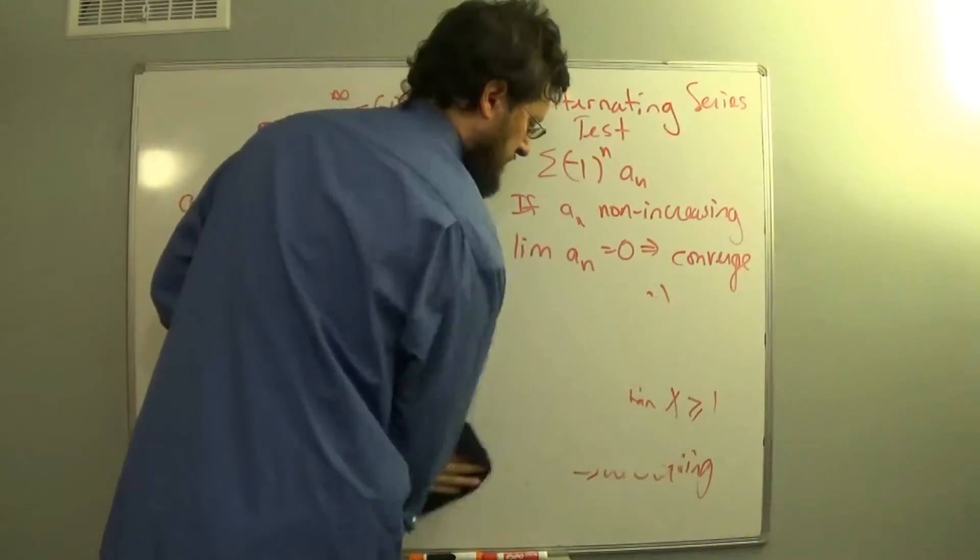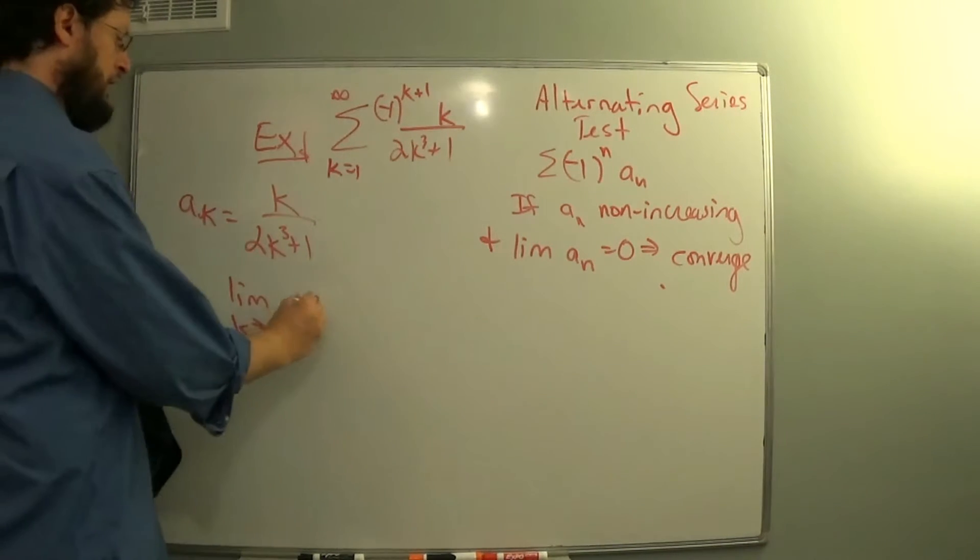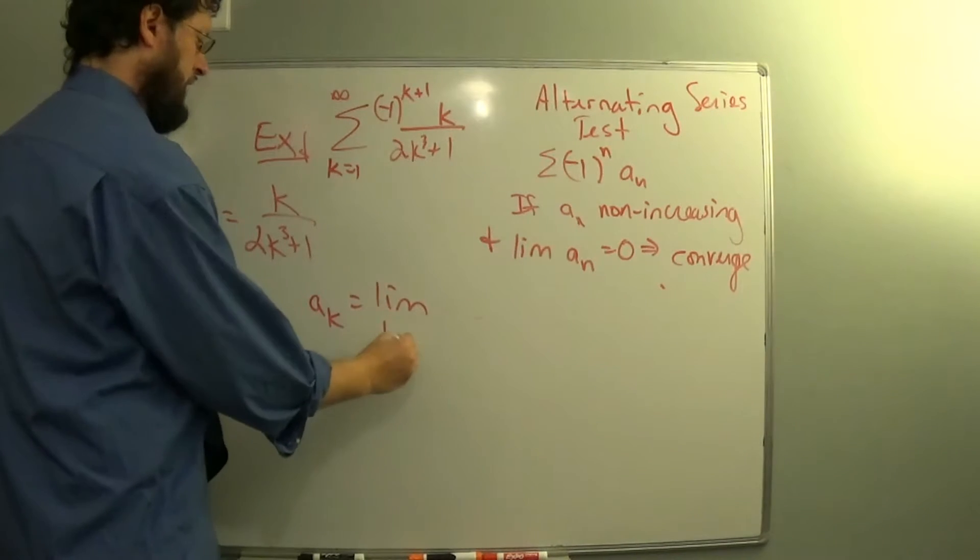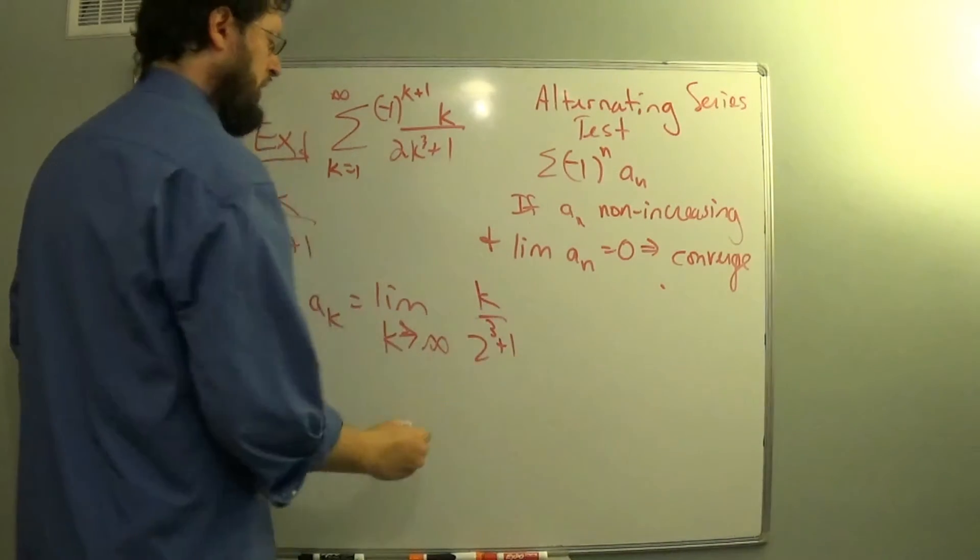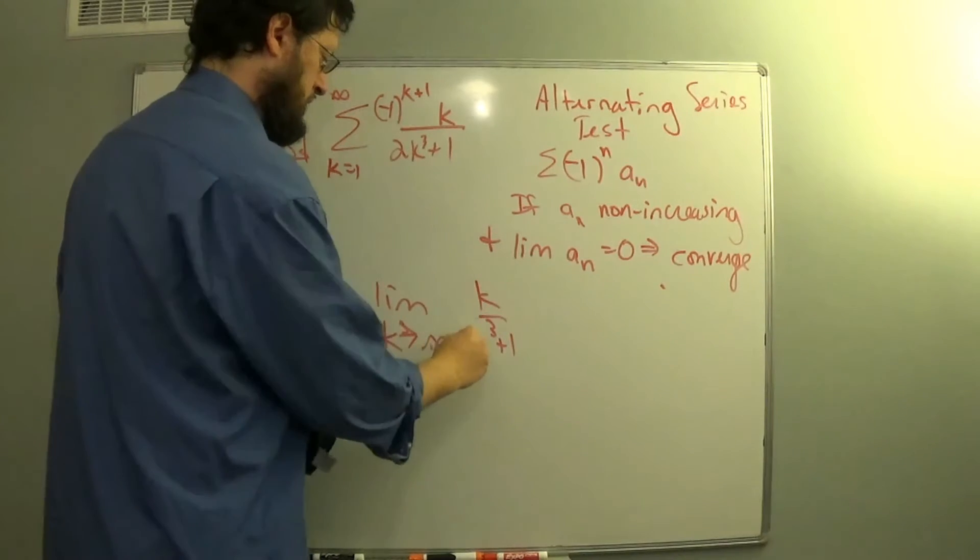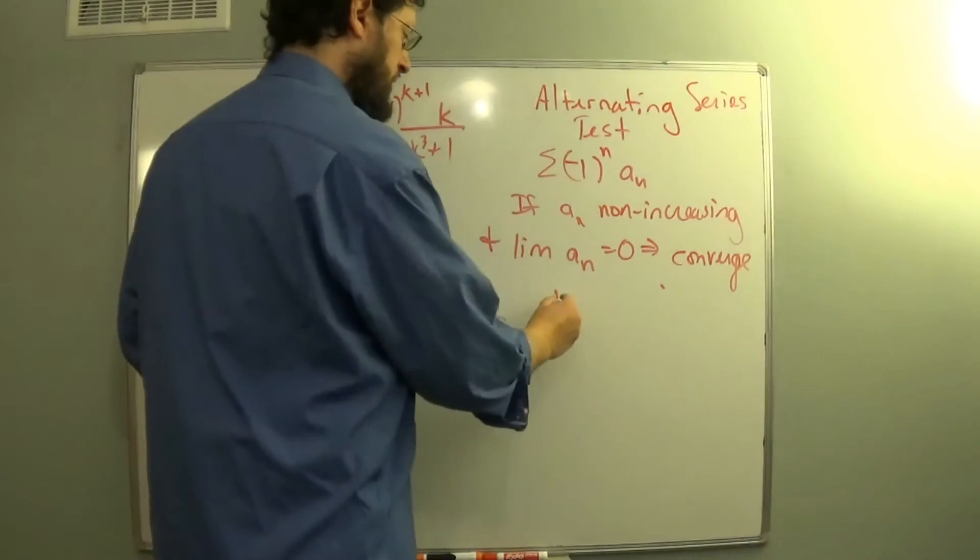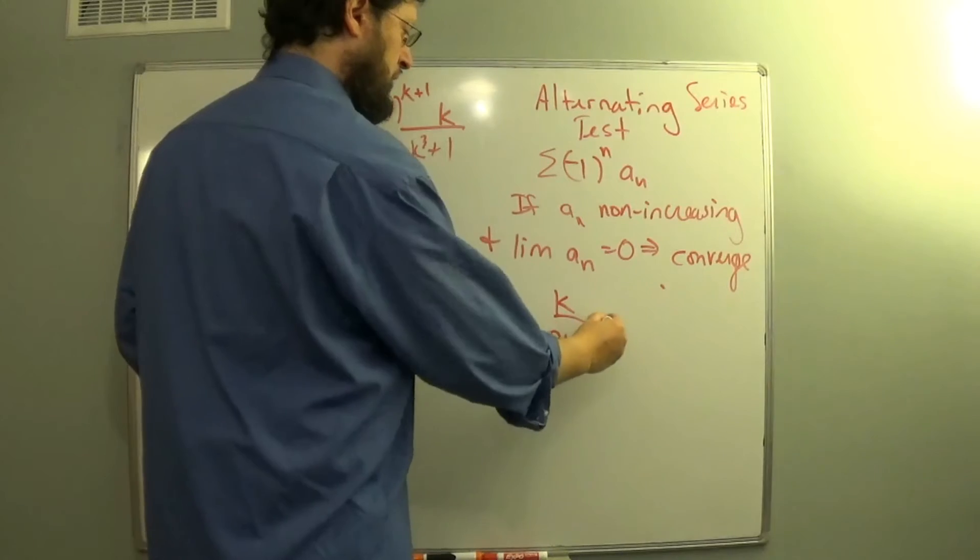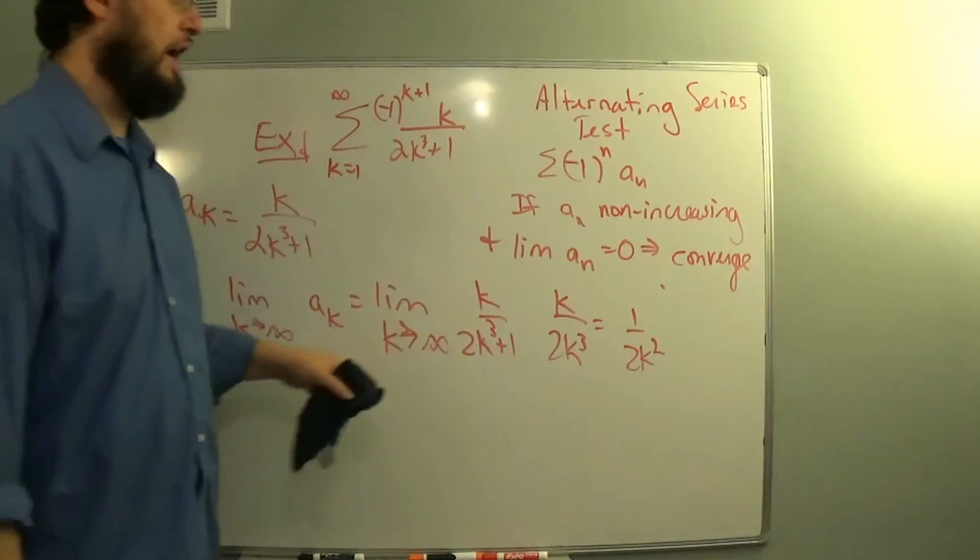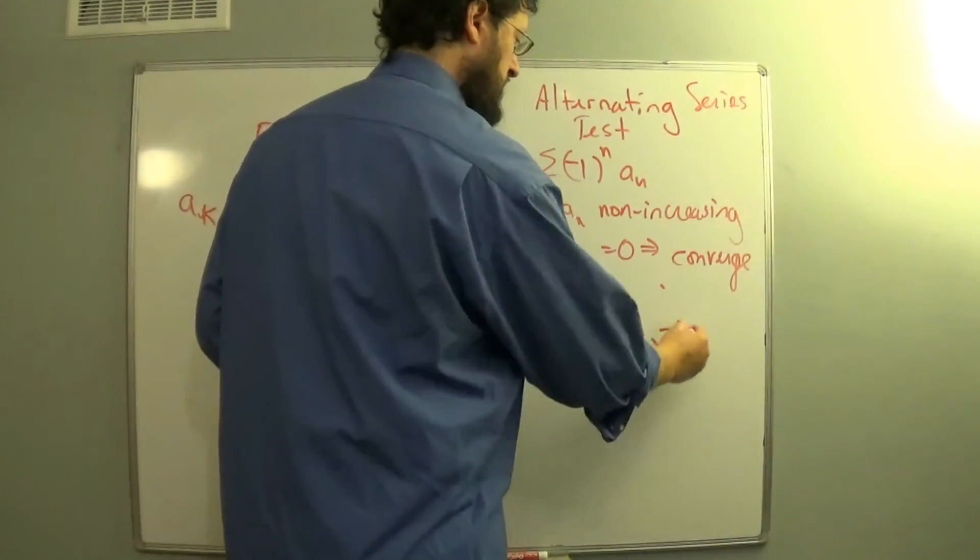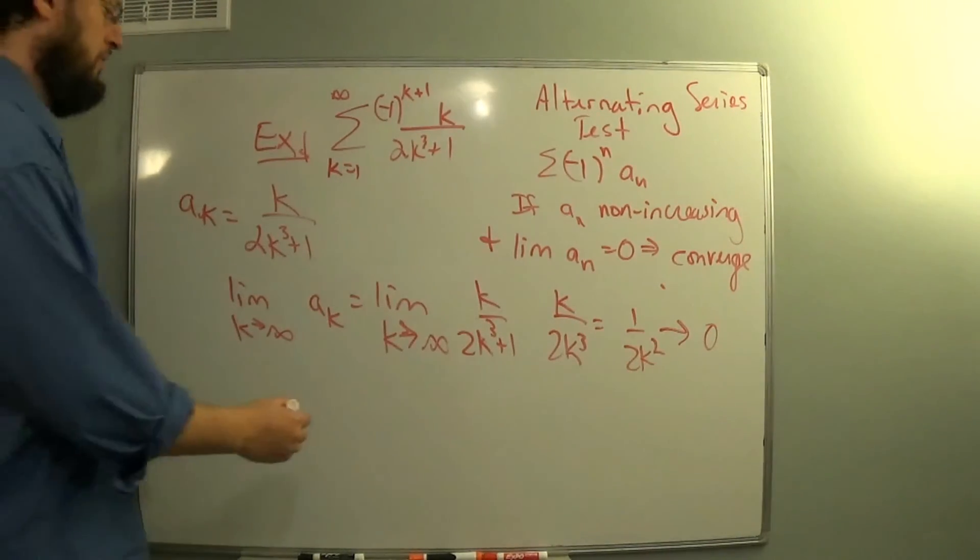Second, what is the limit of the terms? The limit as k goes to infinity of ak is the limit as k goes to infinity of k over 2k cubed plus 1, which is 2k cubed. And we look at the biggest degree terms. The biggest degree term on the top is k, and the bottom is 2k cubed. So that's k over 2k cubed, which is 1 over 2k squared. But either way, the denominator is going to win because it's a higher degree polynomial. So that will go to 0. The terms go to 0, and the second requirement is satisfied, which means that the series converges.